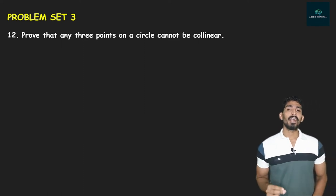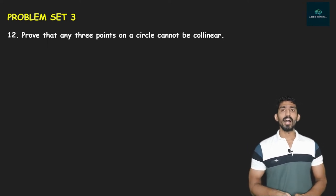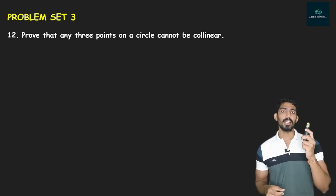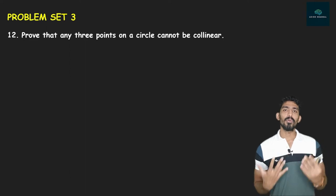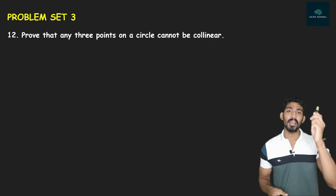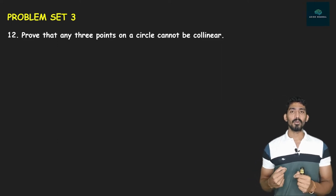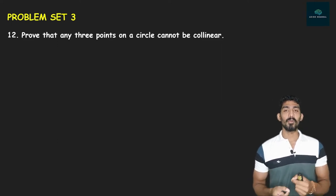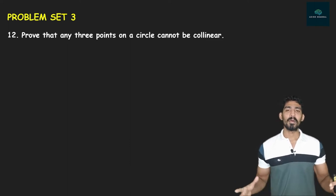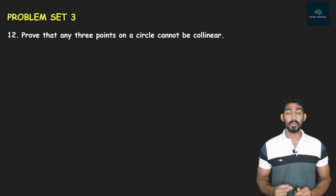उसको हम collinear बोलते हैं। तो यहाँ पे proof करने के लिए हम लोग method use करने वाले हैं called as indirect method, जिसको contradictory method भी बोलते हैं, जहाँ पे हम लोग एक चीज़ को उल्टा करके prove करते हैं। मतलब assume करते हैं — जैसे मान के चलो मेरे हाथ में remote है, तो मैं बोलूँगा कि यह remote नहीं है, और बाद में वो proof गलत हो जाएगा, मेरा assumption wrong हो जाएगा, तो अपने आप theorem के हिसाब से remote proof हो जाएगा।